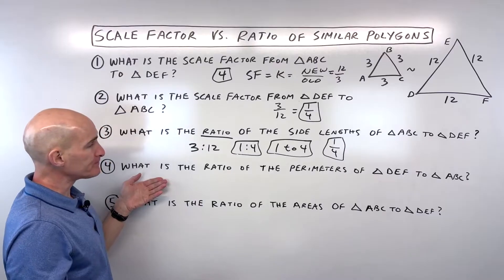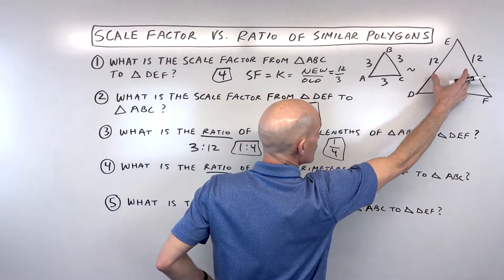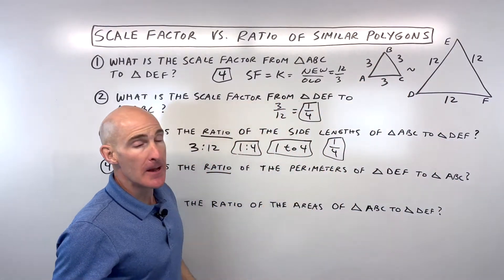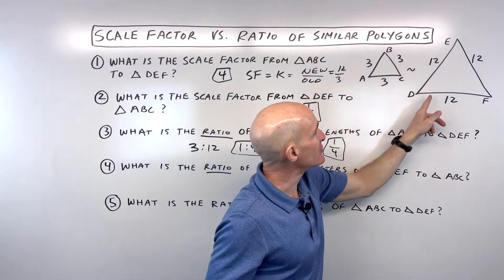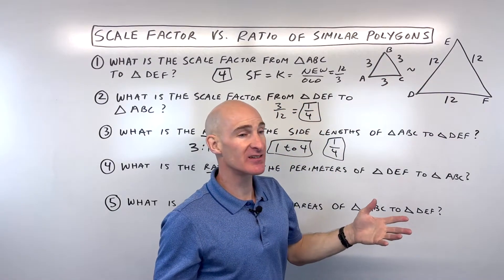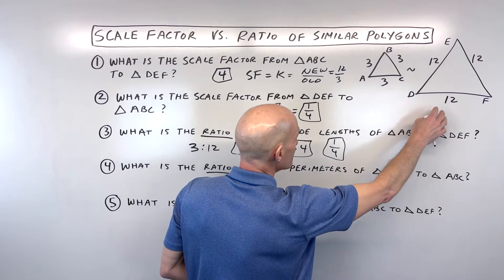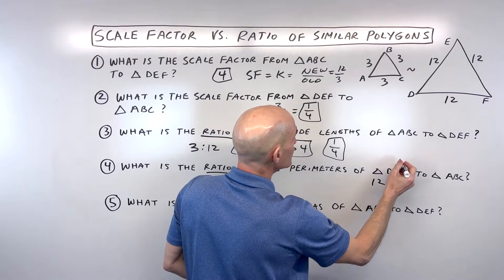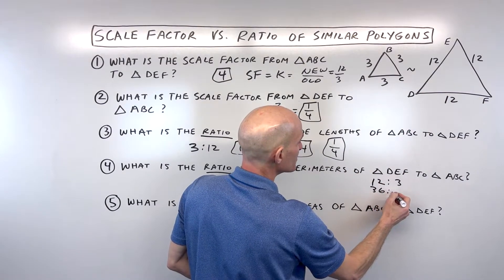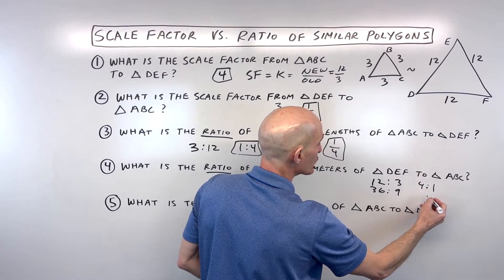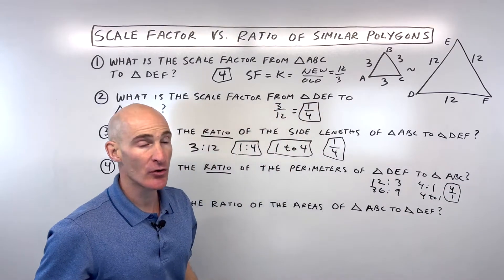Now, for number 4, we're looking at what is the ratio of the perimeters of triangle DEF, this bigger one, to triangle ABC, the smaller one. Well, the ratio of the perimeters is going to be the same as the ratio of the side lengths, okay? Because you can notice here, this is 36, this is 9, 36, 9, that's still a 4 to 1 ratio, right? But notice the order is important. So triangle DEF, that's going to be 12 to ABC, which is 3. Or I could have done the perimeter, which was 36 to 9. But in either case, it's reducing to 4 to 1, 4 to 1, or 4 to 1 as a fraction, okay? Any of those are going to be correct.